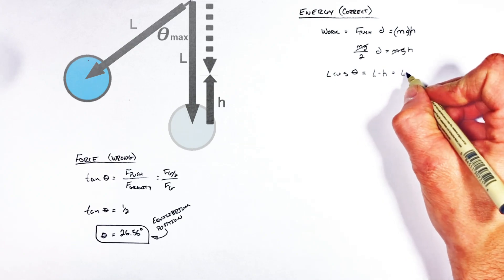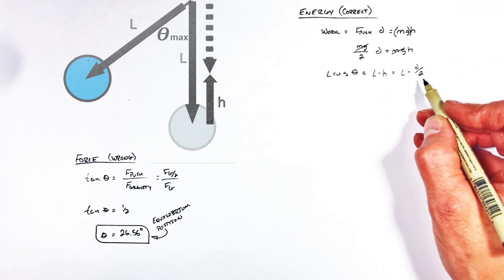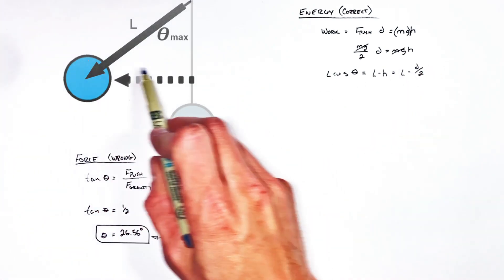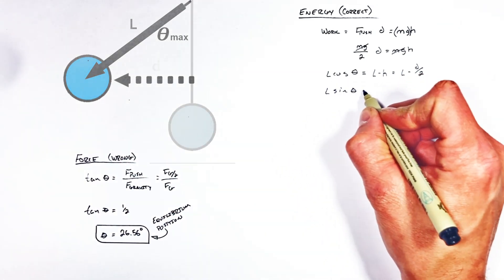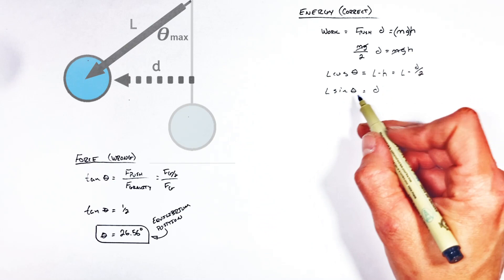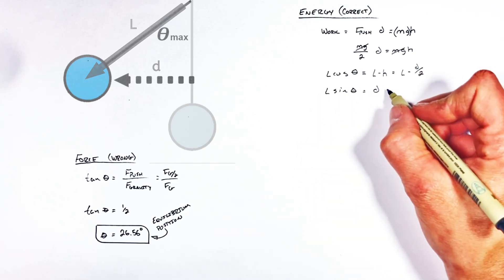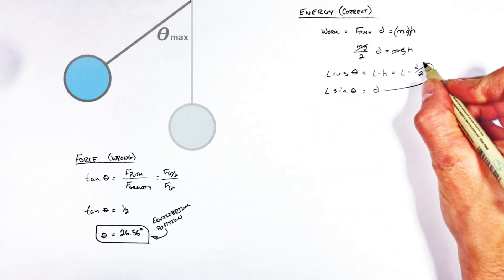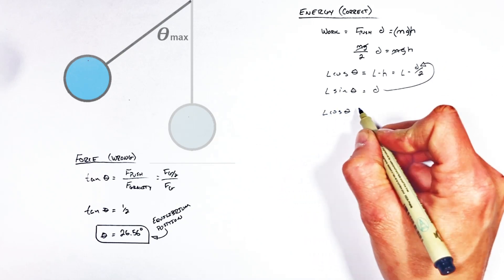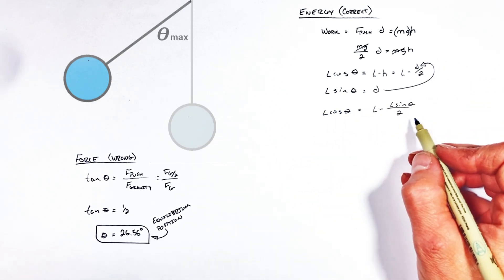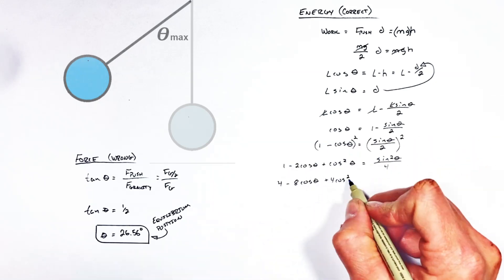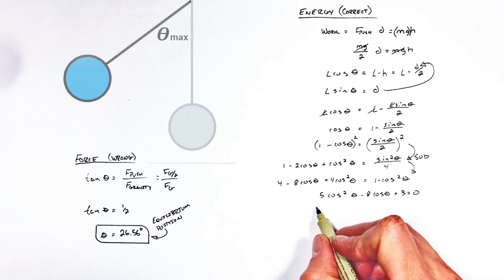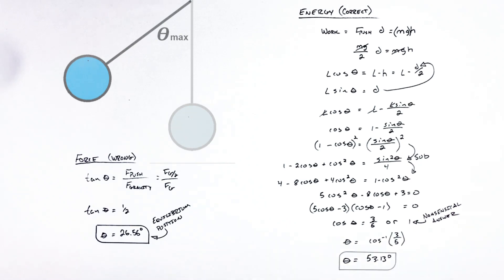Or you could say that's l minus d over 2. Much in the same way, looking at this horizontal component of the pendulum's position, we can say l sine theta is equal to d. So substituting this term for l sine theta right in here for d, we get this term. Through a bit of geometry and algebra, we find the maximum angular displacement of this pendulum as it swings backwards is just a hair over 53 degrees.